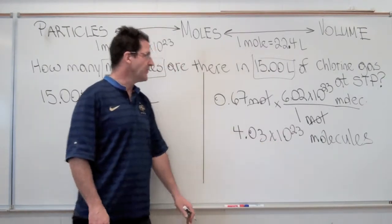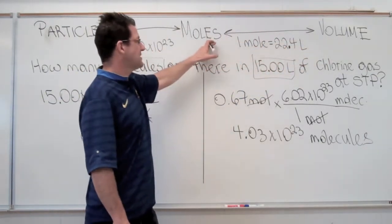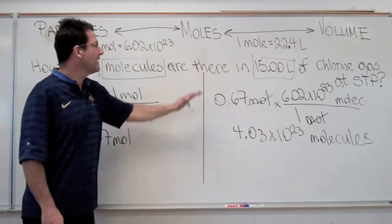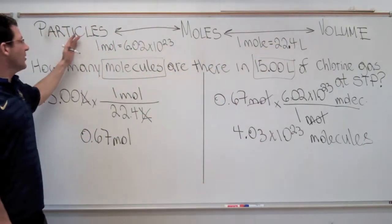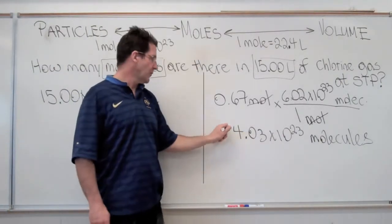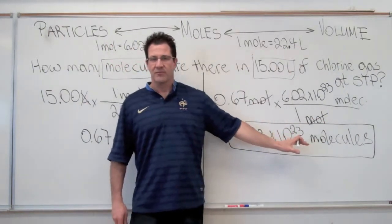You can see we did both steps. We started with the volume in liters, went to moles using the molar volume of one mole of the gas, then we went from moles to particles using Avogadro's constant. And we end up with 4.03 times 10 to the 23rd molecules.